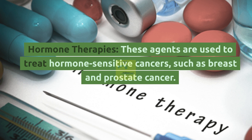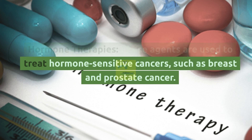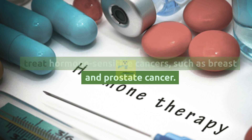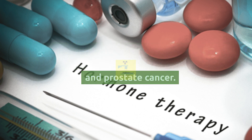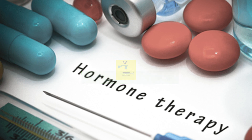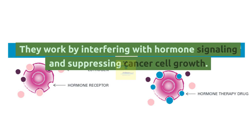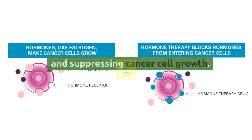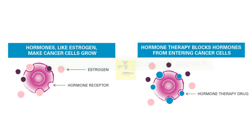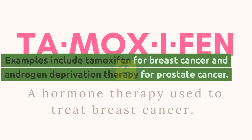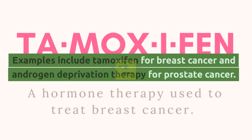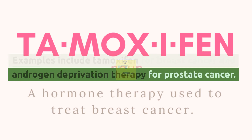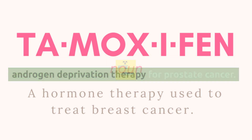Hormone therapies: these agents are used to treat hormone-sensitive cancers, such as breast and prostate cancer. They work by interfering with hormone signaling and suppressing cancer cell growth. Examples include tamoxifen for breast cancer and androgen deprivation therapy for prostate cancer.